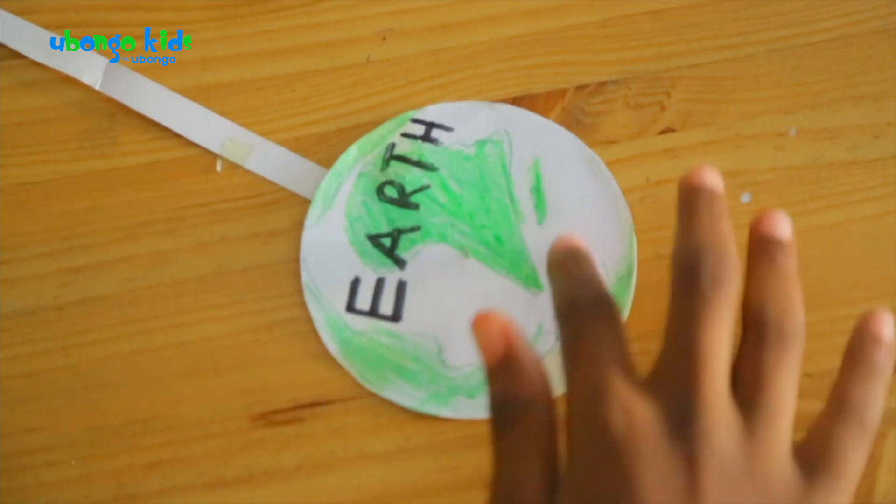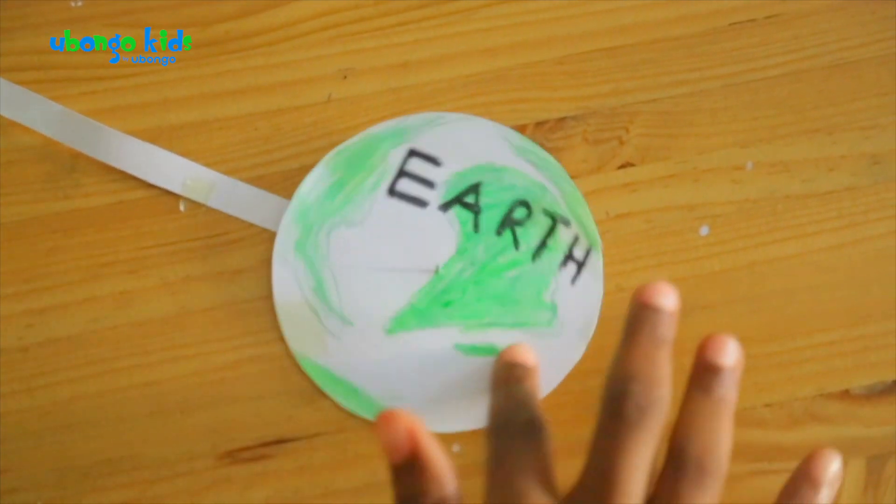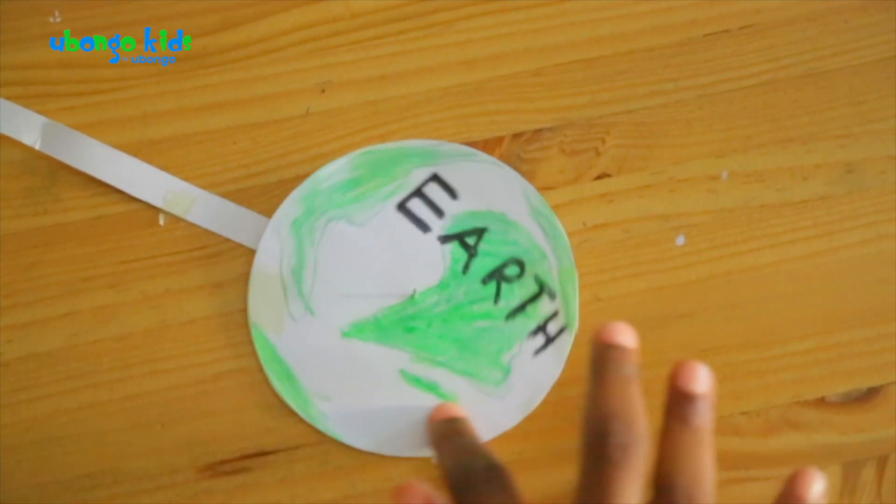Every day the earth rotates on its axis. It takes 24 hours to complete one rotation. And it is this rotating movement that causes day and night.